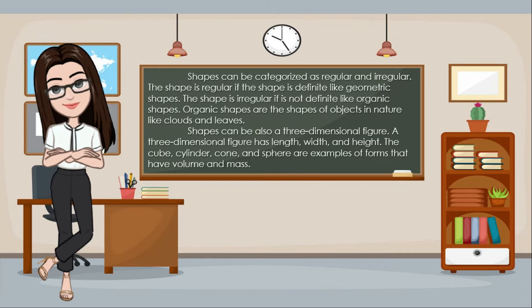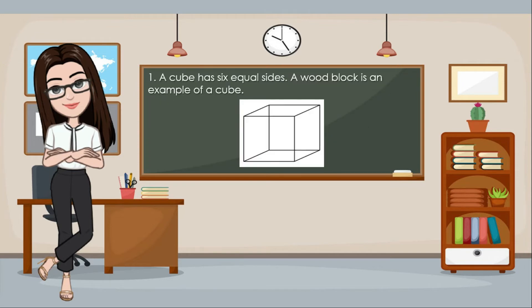Shapes can also be a three-dimensional figure. A three-dimensional figure has length, width, and height. The cube, cylinder, cone, and sphere are examples of forms that have volume and mass. A cube has six equal sides.